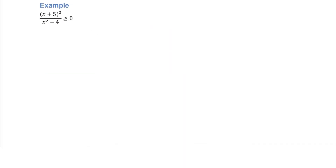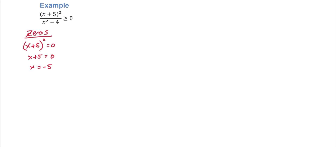In this first example, step 1 is done for us. Notice the left side has a single fraction and the right side is zero. We next can find the x-intercepts, also known as zeros. We do that by setting the numerator equal to zero and solving. Take the square root of both sides: x plus 5 equals zero, then subtract 5 on both sides and x is negative 5.